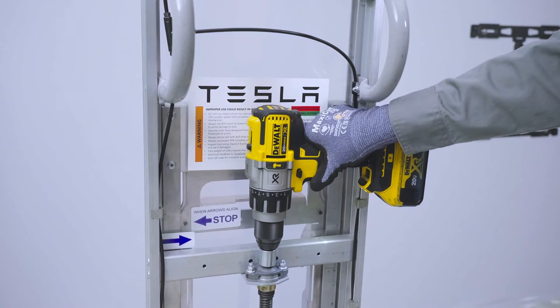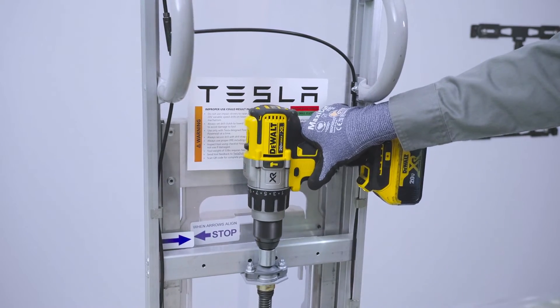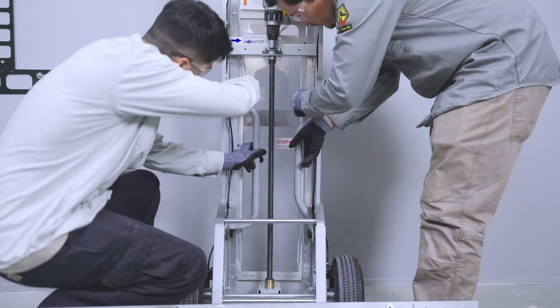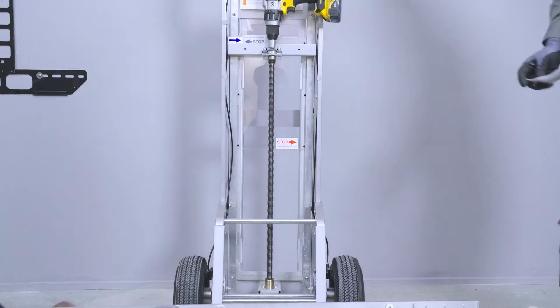Operate the drill in forward to raise the lifting platform and use the reverse setting to lower it. Proceed to removing the lifting handles from the frame of the Dolly. Please note that these are two differently shaped handles.